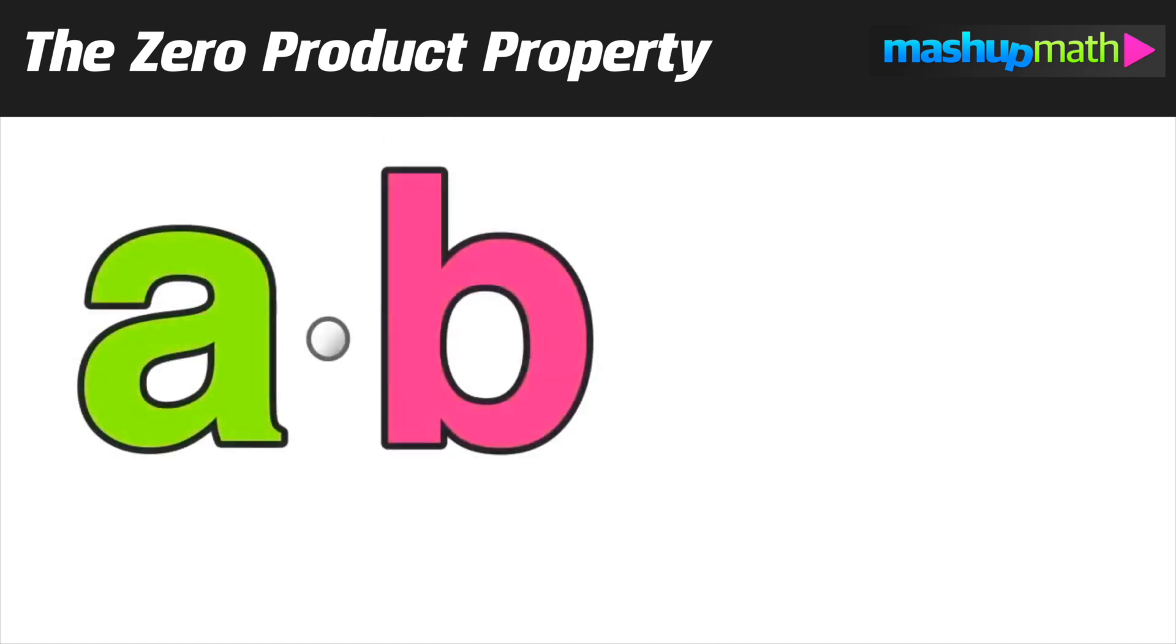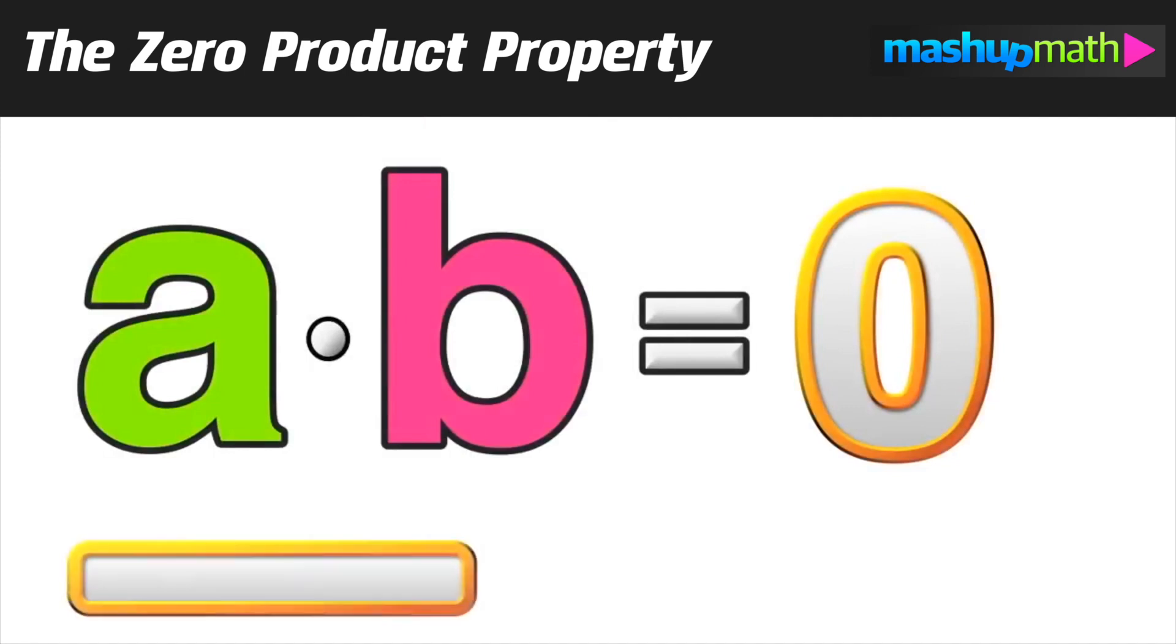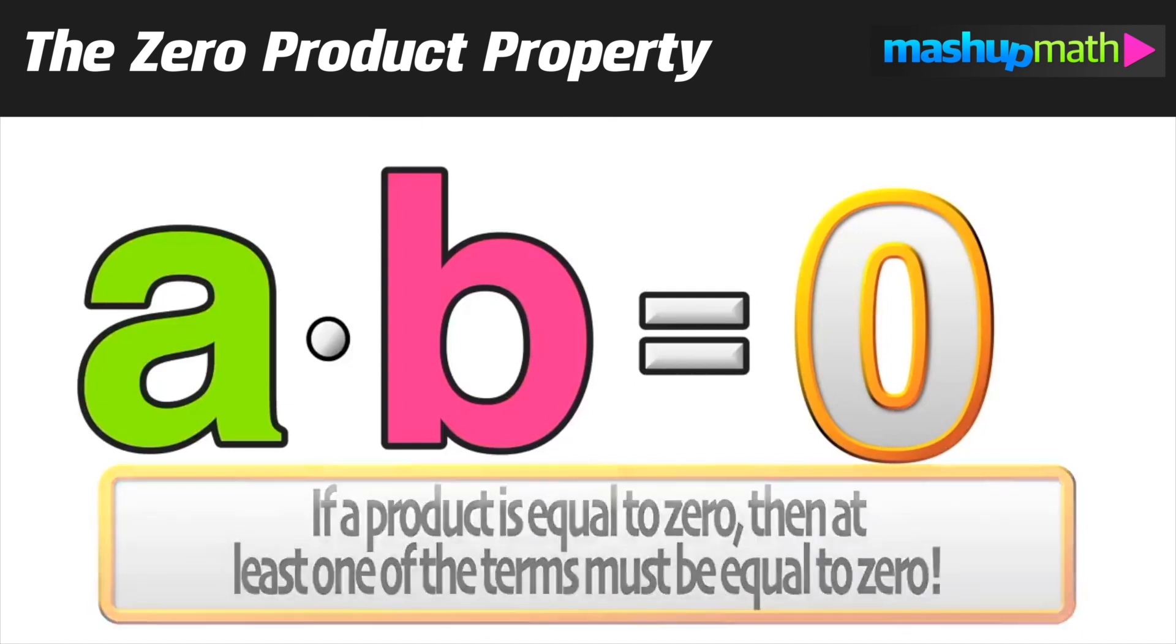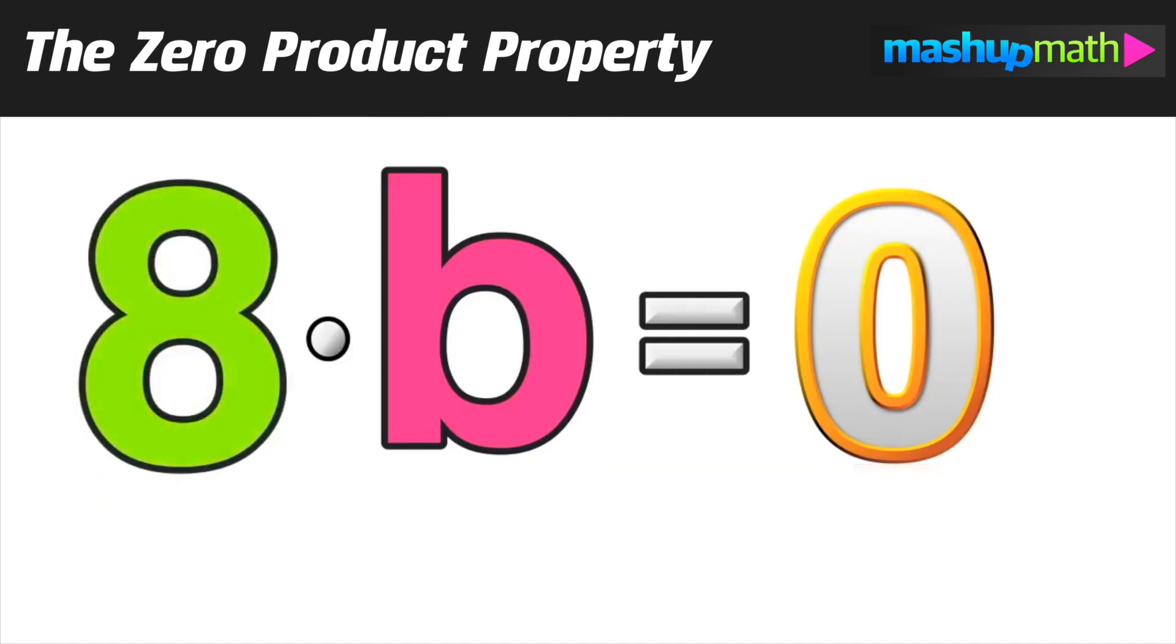Next, we can envision a scenario where we have two real numbers, we'll call them a and b, and their product is equal to zero. Now, we're going to say that if a product equals zero, then at least one of the terms, either the a or the b, must equal zero, since we know that any number times zero is going to equal zero.